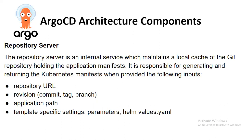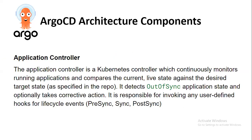The Repository Server is an internal service which maintains a local cache of the git repository holding the application manifests. It is responsible for generating and returning the Kubernetes manifest when provided with the following inputs: repository URL, revision (commit, tag, or branch), application path, and template-specific settings such as parameters, Helm, and values.yaml.